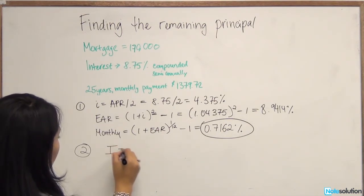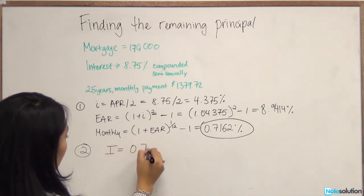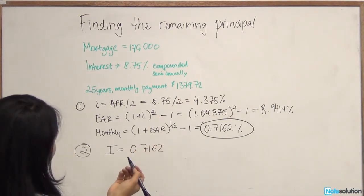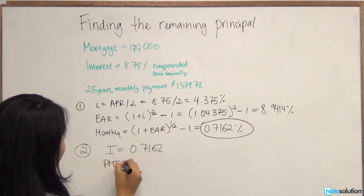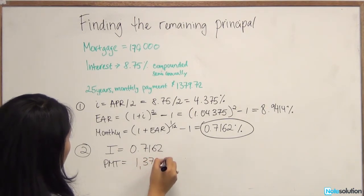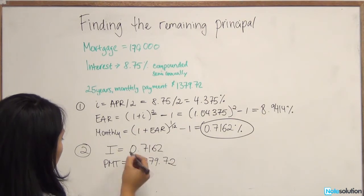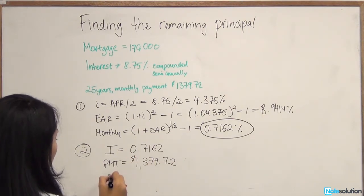We have I, which we just calculated as 0.7162. You should always use the monthly terms because you're doing monthly payments. We have a payment of $1,379.72 a month, and that's already given to us in the problem. Next we have our period, N.